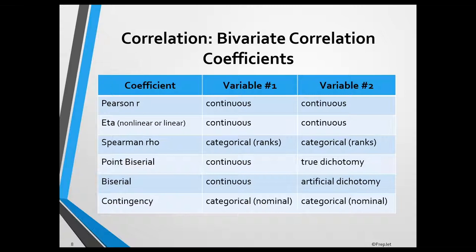Next is Spearman Rho, also known as the Spearman Rank Order Correlation Coefficient, which is used when data on both variables are ranks. It would be the appropriate correlation coefficient for IQ and achievement test scores when scores on both tests have been converted to ranks.